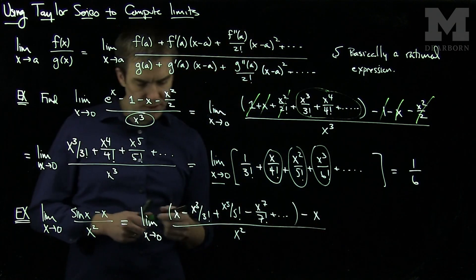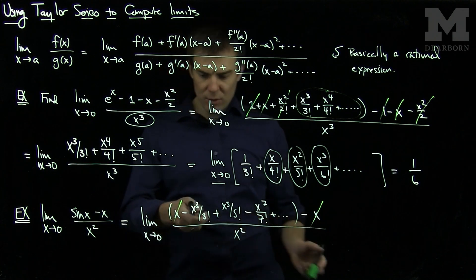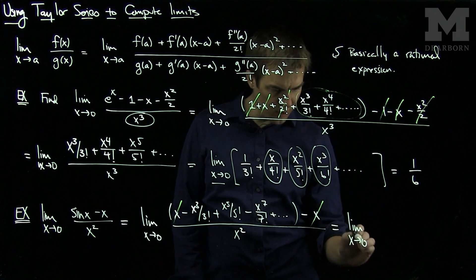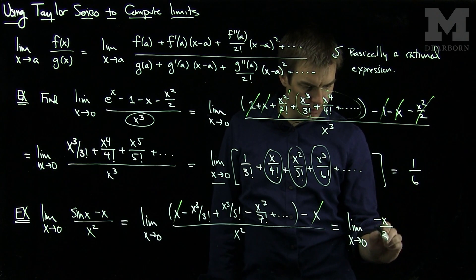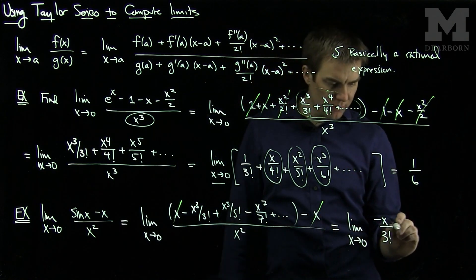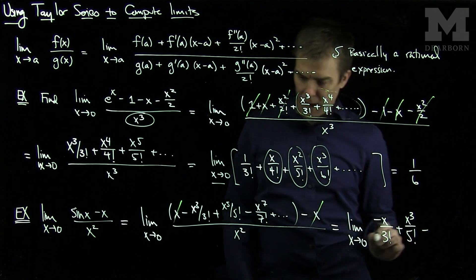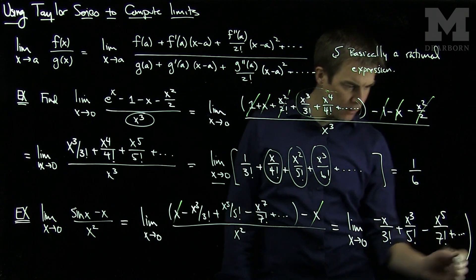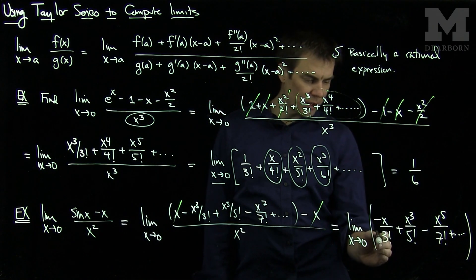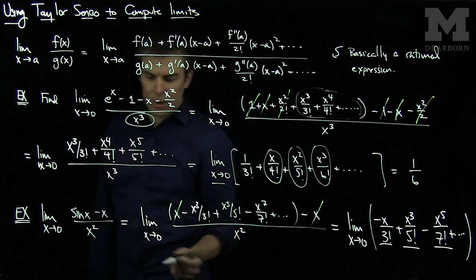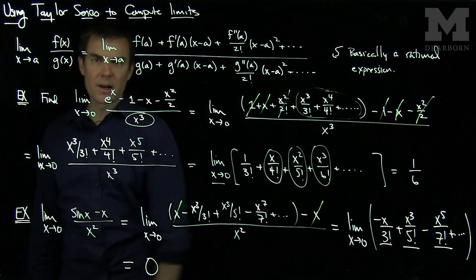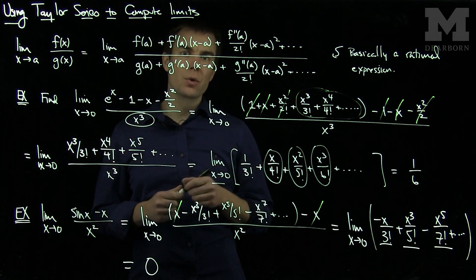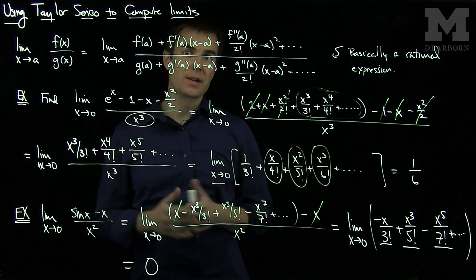The only thing that cancels in the numerator is the x term. We're left with the limit as x approaches 0 of (−x/3! + x³/5! − x⁵/7! + ...). When we plug in x = 0, every term goes to 0, so this limit equals 0. Often we can quickly find limits by writing down the Taylor expansion of well-known functions and simplifying to a rational expression, a polynomial, or an infinite series in x.